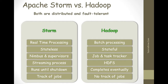Storm uses a master-slave architecture where the master node is called Nimbus and the slaves are called Supervisors. Hadoop also follows the same master-slave architecture where the master is called Job Tracker and the slave is called Task Tracker. A Storm streaming process can access tens of thousands of messages per second in a cluster.